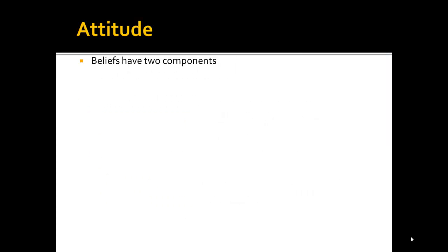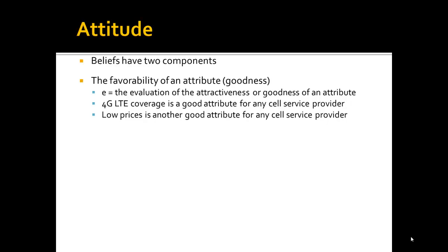Beliefs have two components we need to consider for this model. The first is that any feature or attribute of the attitude object can be looked at as being good or bad — favorable or unfavorable. For example, 4G LTE coverage is a favorable attribute for any cell service provider, as is low prices. The term we'll use in the model to represent this is E, which stands for the evaluation — good or bad — of the attractiveness or goodness of an attribute held by the attitude object.